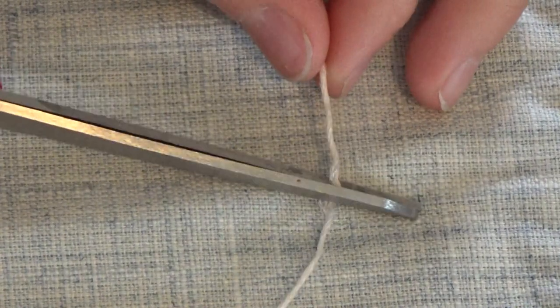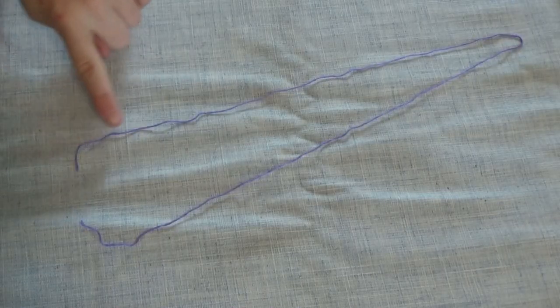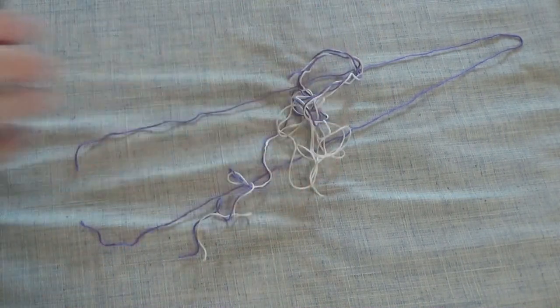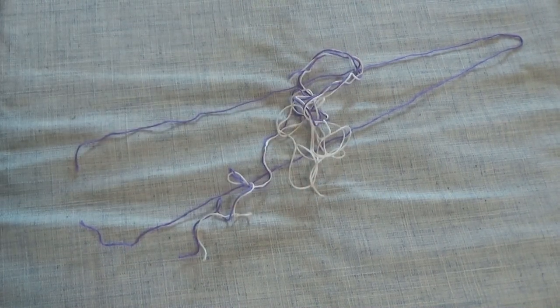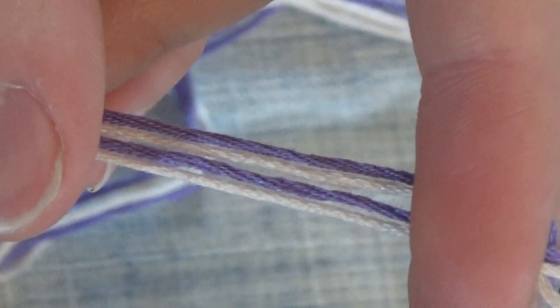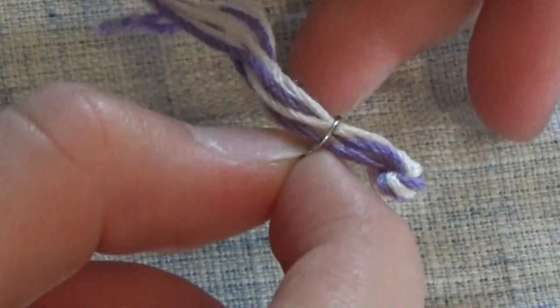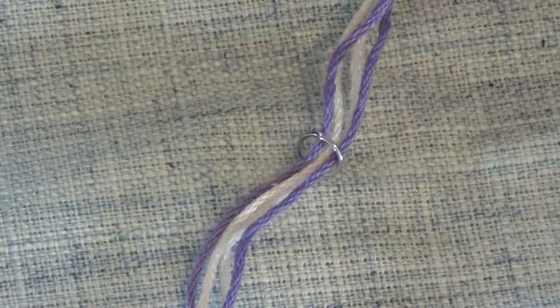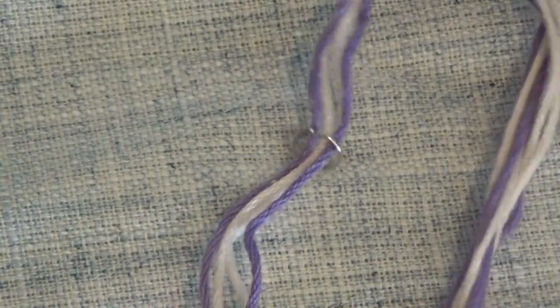Then you're going to take some embroidery thread and cut a long piece of it. Once it's folded in half, it should be a little longer than the length you want your lead rope to be. Then cut 3 more. So I cut 2 purple and 2 cream, and then I thread the jump ring into the center of the 4 pieces and tied a knot.